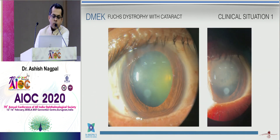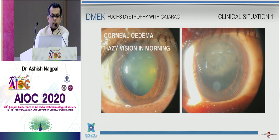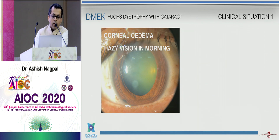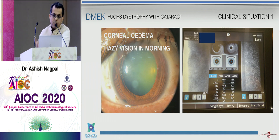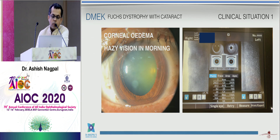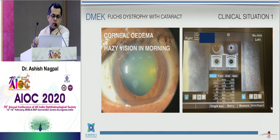Coming back to the first clinical situation: the patient has obvious corneal edema and is also symptomatic — hazy vision in the morning. An important point is that a patient with Fuchs will complain of more hazy vision in the morning. On specular microscopy, the left unaffected eye is fairly normal; the right eye couldn't even get a good endothelial image because of the edema. You cannot go just by the numbers — the machine may show 2400 cells, which may not be accurate due to miscalculation of the image.